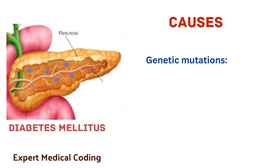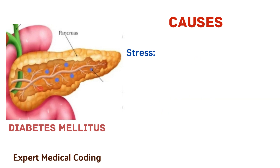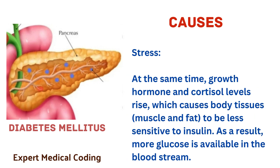The next cause is genetic mutations. Certain genetic mutations can cause maturity onset diabetes of the young and neonatal diabetes. The next cause is stress. When stressed, the body prepares itself by ensuring that enough sugar or energy is readily available. Insulin levels fall, glucagon and adrenaline levels rise, and more glucose is released from the liver. At the same time, growth hormone and cortisol levels rise, which causes body tissues, muscle and fat to become less sensitive to insulin. As a result, more glucose is available in the bloodstream.